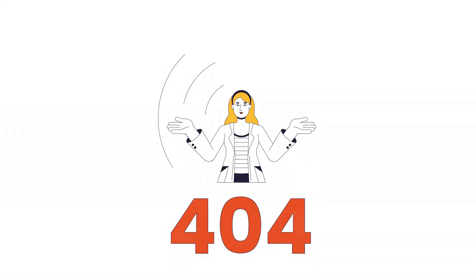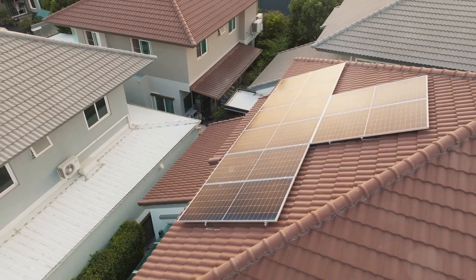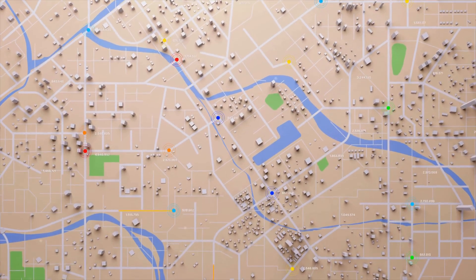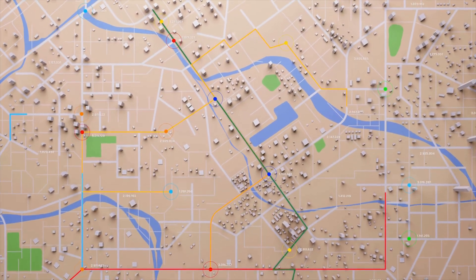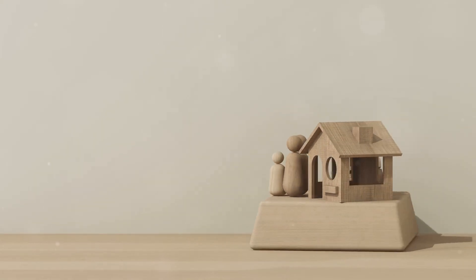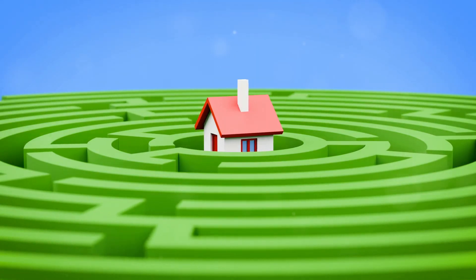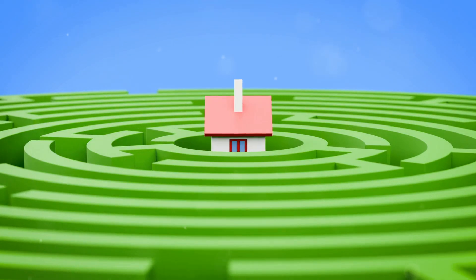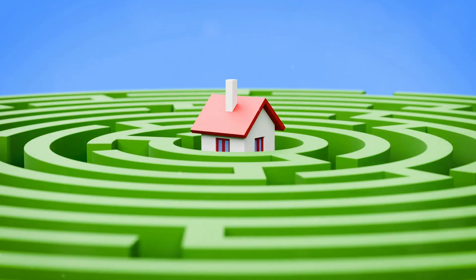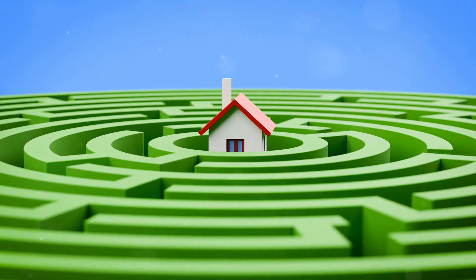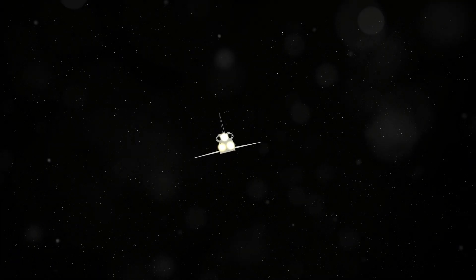Now you might be wondering, how does it work? Well, the solar load model uses some fancy math and physics to calculate how much solar radiation hits different surfaces. It takes into account things like the time of day, the season, and even the location of the building. This allows for really accurate simulations that help us design better buildings. Whether you're designing a skyscraper or just trying to understand how to keep your bedroom cool in the summer, the solar load model in Ansys Fluent is a powerful tool that helps us harness the power of the sun. Stay tuned as we explore its features and learn how to use it.